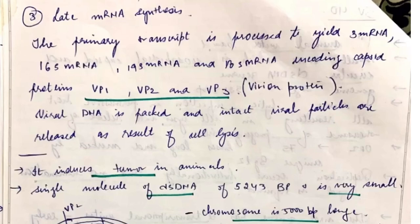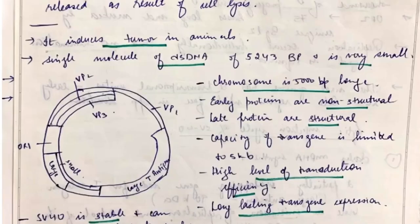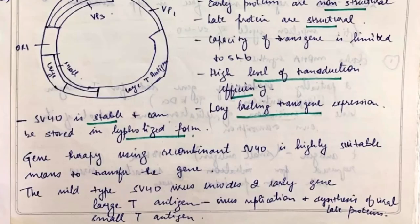The primary transcript is now processed to yield three mRNAs: 16S mRNA, 19S mRNA, and 18S mRNA that encodes capsid proteins of VP1, VP2, and VP3. On the right-hand side I have mentioned the different features of the structures like it is single molecule of double-stranded DNA, its chromosome is 5000 base pair, it is non-structural, it has limited protein capacity to transfer gene, and so on.